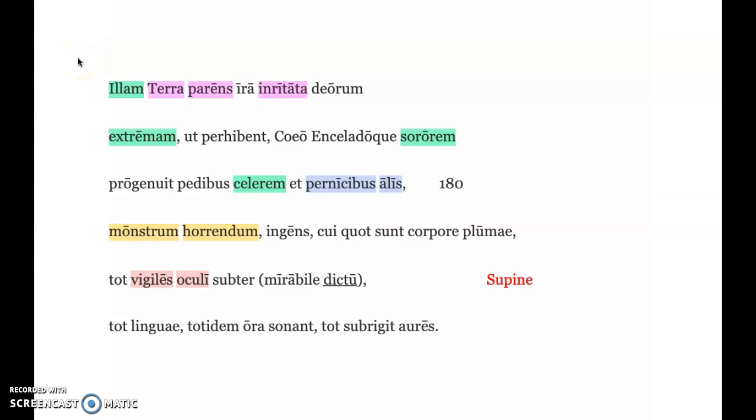Salve te omnes, let's continue with the Aeneid Book Two. Illam Terra parens ira irritata deorum extrema ut perhibet, Coeo Enceladoque sororum progenuit pedibus celerem pernicibus alis, monstrum horrendum ingens cui tot sunt corpore plumae tot vigiles oculi subter mirabile dictu, tot linguae totidem ora sonant tot subrigit aures.